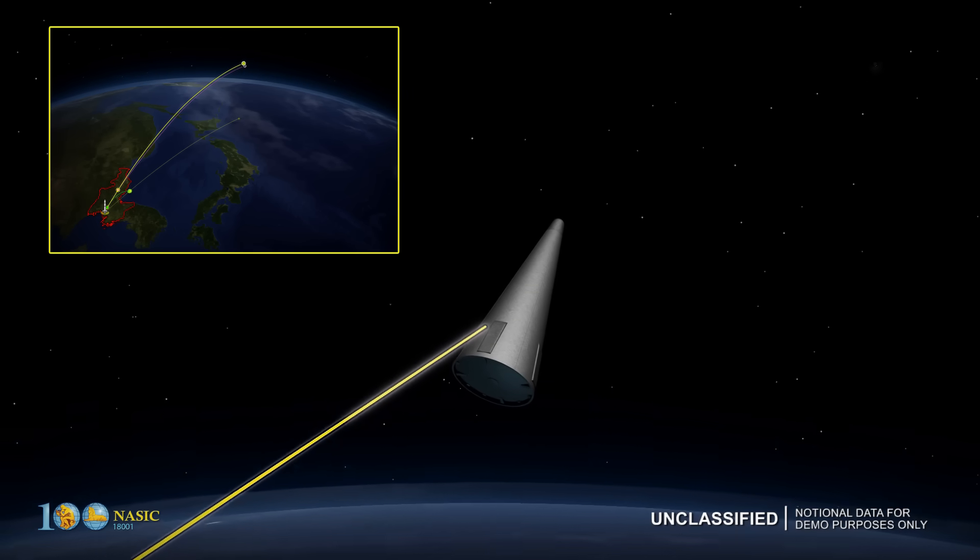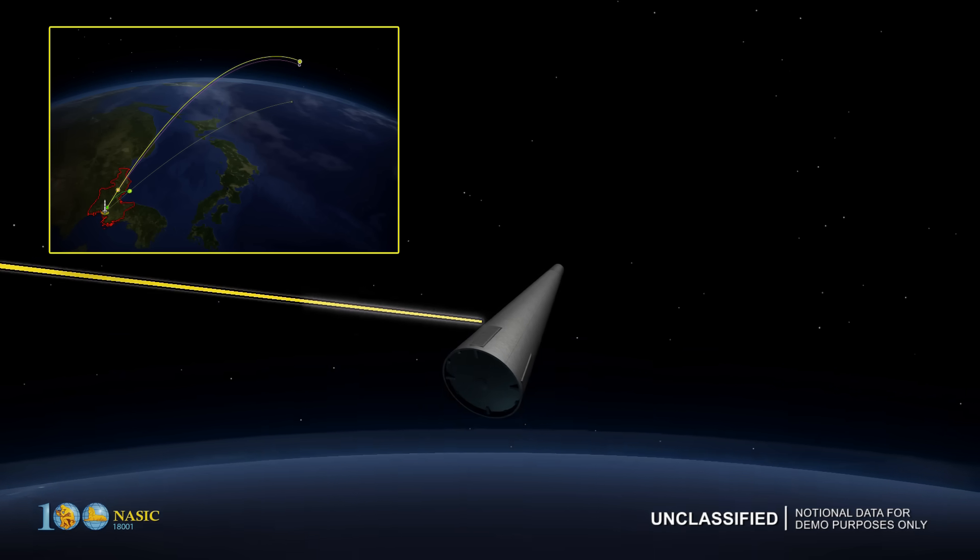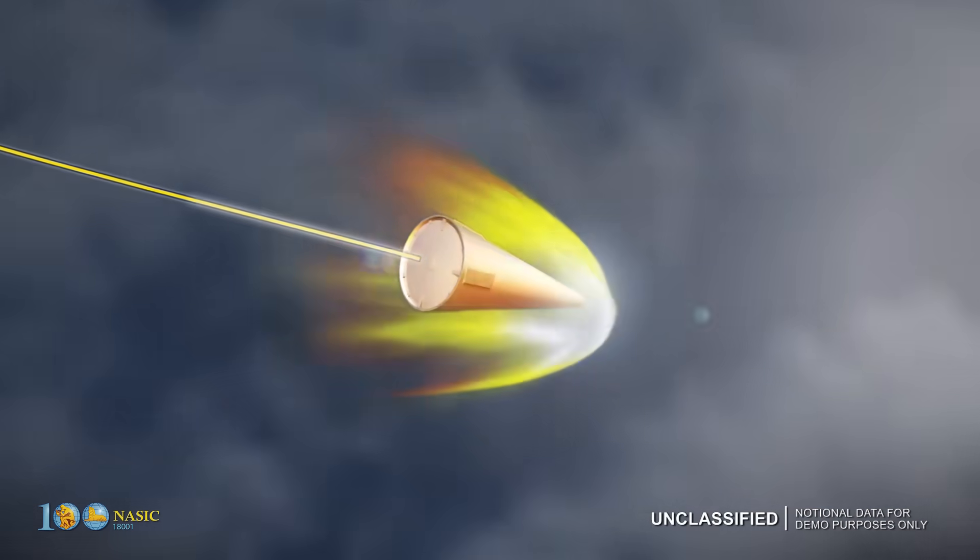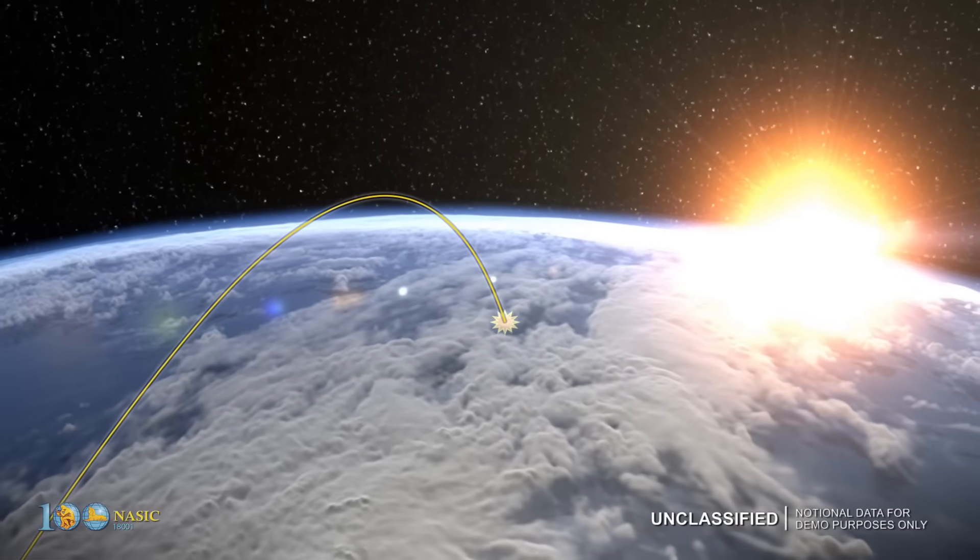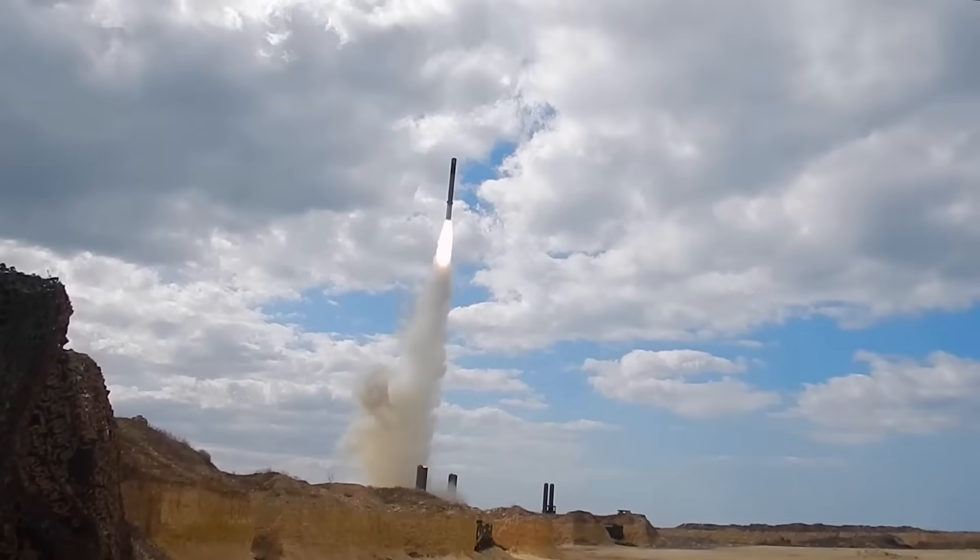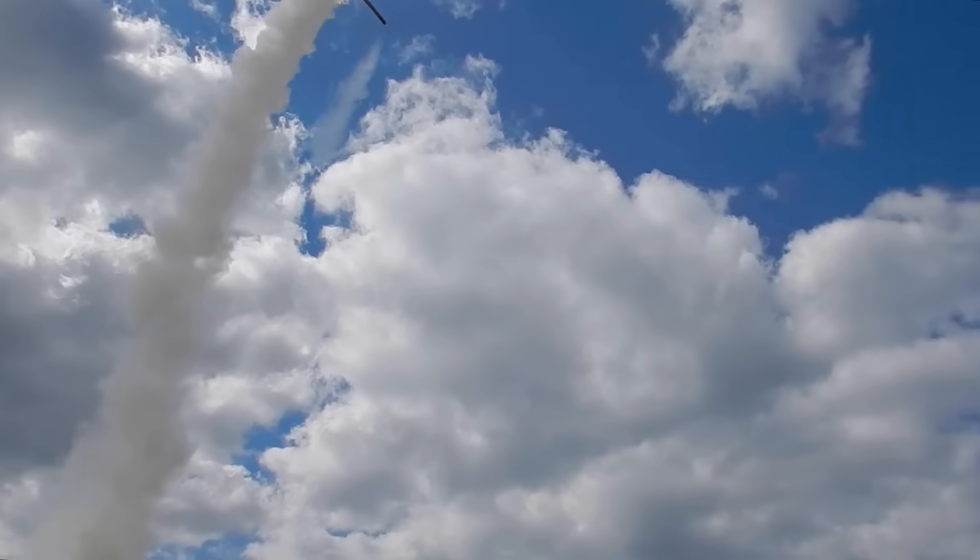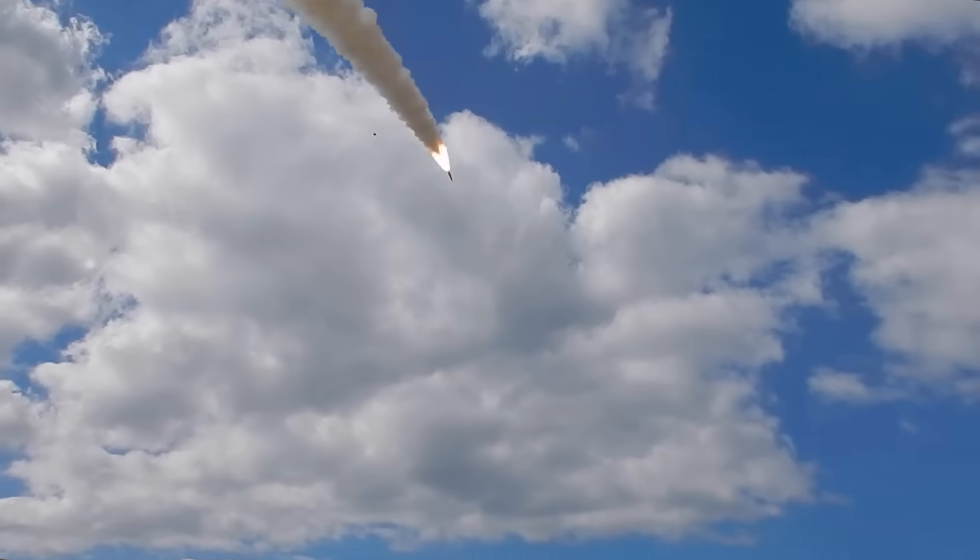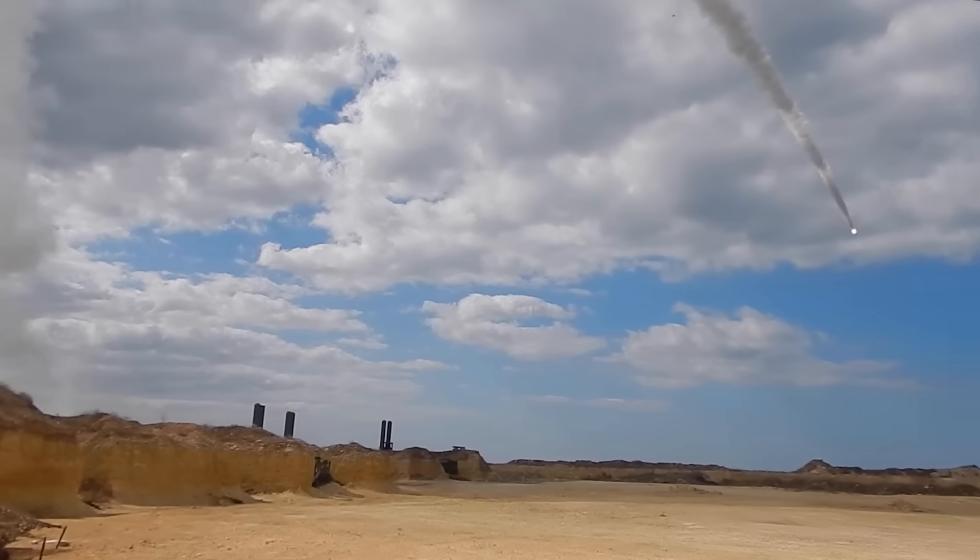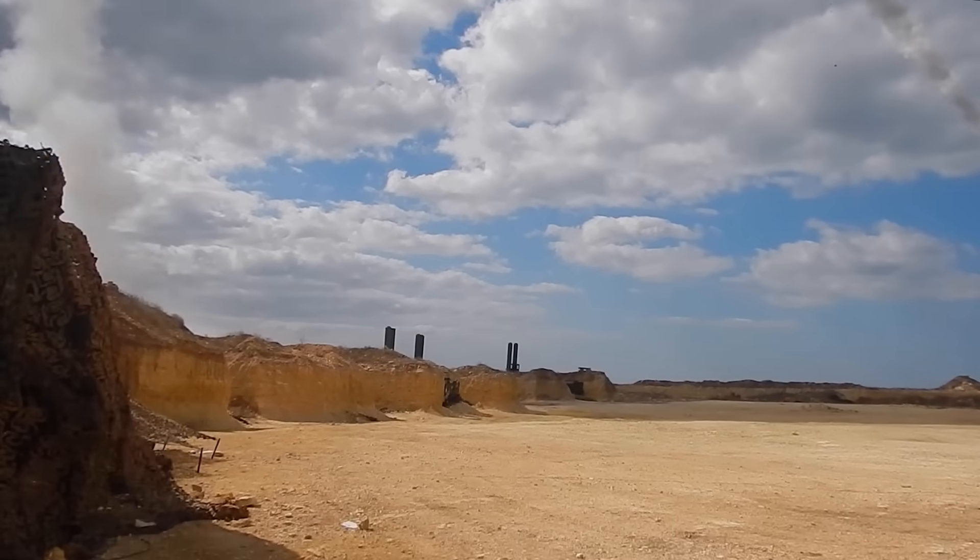After that, the missile coasts toward its target just like a ball out of our hands. That is what the word ballistic refers to. But this is not the case with a cruise missile. A cruise missile has continuous propulsion from the moment it is launched until it reaches its destination.